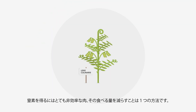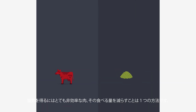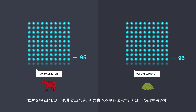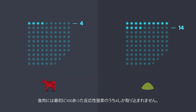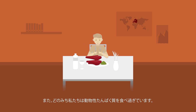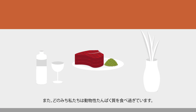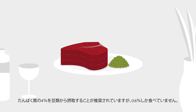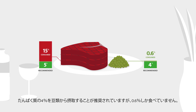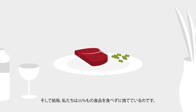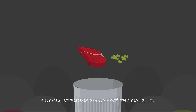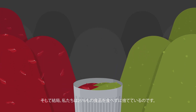By eating less meat — a very inefficient process to obtain nitrogen. Only 4 out of 100 molecules of reactive nitrogen are absorbed. And we are eating too much animal protein anyway, while we only eat 0.6% from the 4% recommended legume protein. And in the end, we even waste 25% of all the food produced.